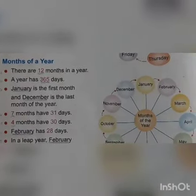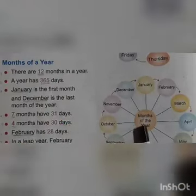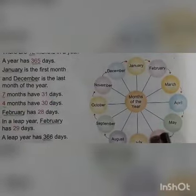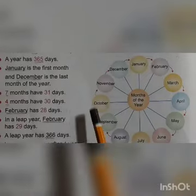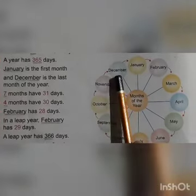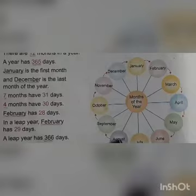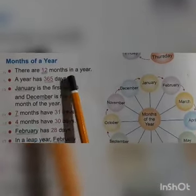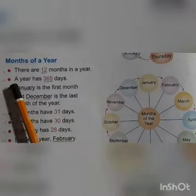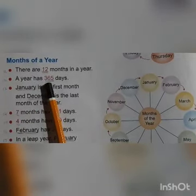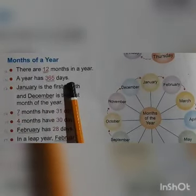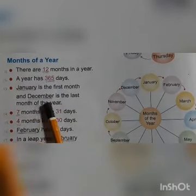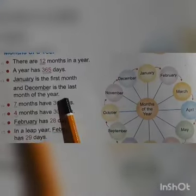About the months of the year: the 12 months are January, February, March, April, May, June, July, August, September, October, November, December. There are 12 months in a year. A year has 365 days. January is the first month and December is the last month of the year.